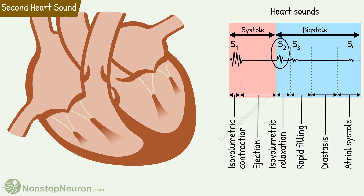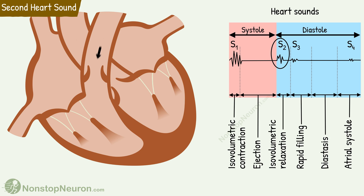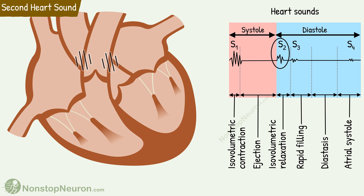Now let's study the second heart sound. It is associated with the closure of semilunar valves at the end of the systole. The mechanism behind this sound is somewhat similar to that of the first heart sound. At the end of the systole, the backflow of the blood closes the valves and makes them bulge into the ventricles. But the elastic stretch of the valves recalls the blood back into the arteries. This produces vibrations in blood, valves, and wall of large arteries. These vibrations are transmitted in adjacent tissues and heard as the second heart sound.